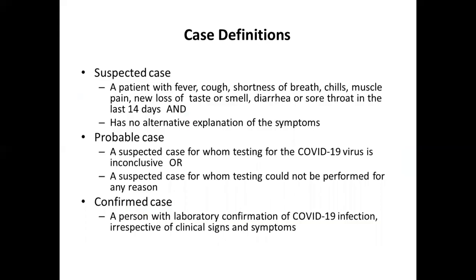Regarding case definitions: a patient is said to have a suspected case if they have fever, cough, shortness of breath, chills, muscle pain, new loss of taste or smell, diarrhea, or sore throat in the last 14 days with no alternative explanation. A probable case is a suspected case in whom testing for coronavirus is inconclusive or could not be performed. A confirmed case is one with laboratory confirmation of COVID-19 infection, irrespective of clinical signs and symptoms.